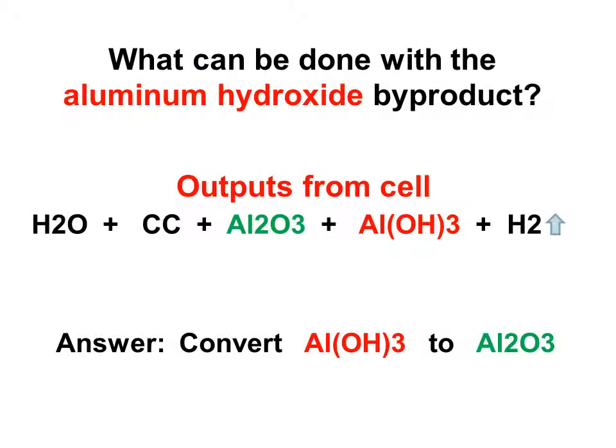This brings us to an important question: we've got all this aluminum hydroxide that's been produced as a result of creating hydrogen—what are we going to do with it? One answer, a very good answer, is: let's just convert the aluminum hydroxide to aluminum oxide. It's easy to do—all you have to do is dry out the aluminum hydroxide and it will turn into aluminum oxide.